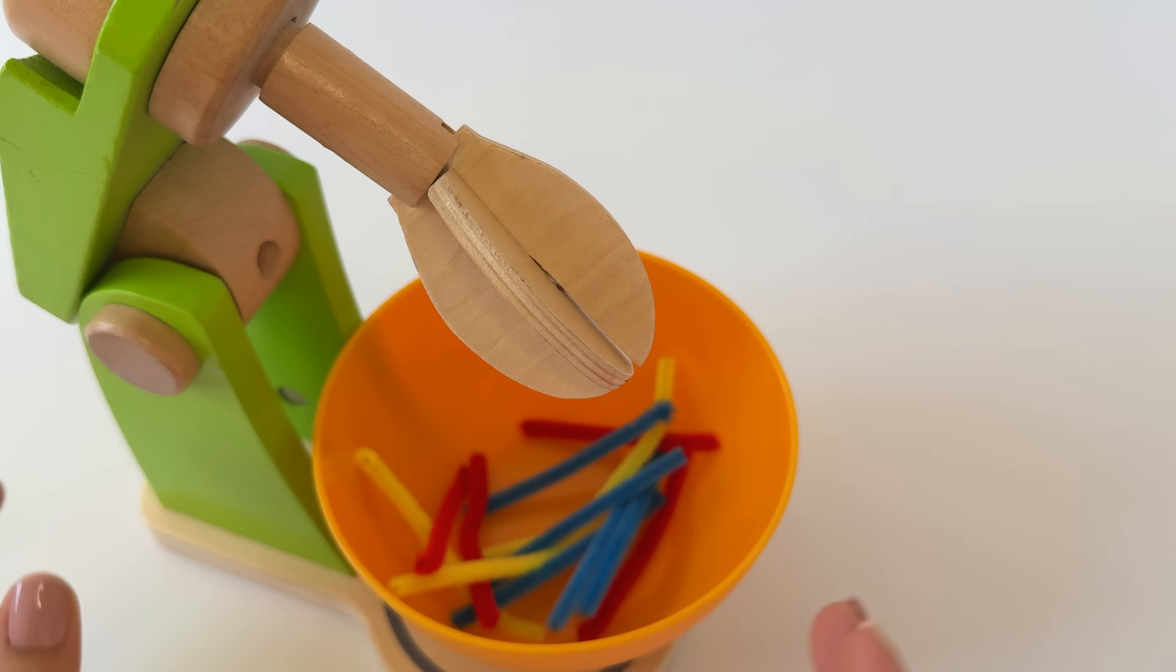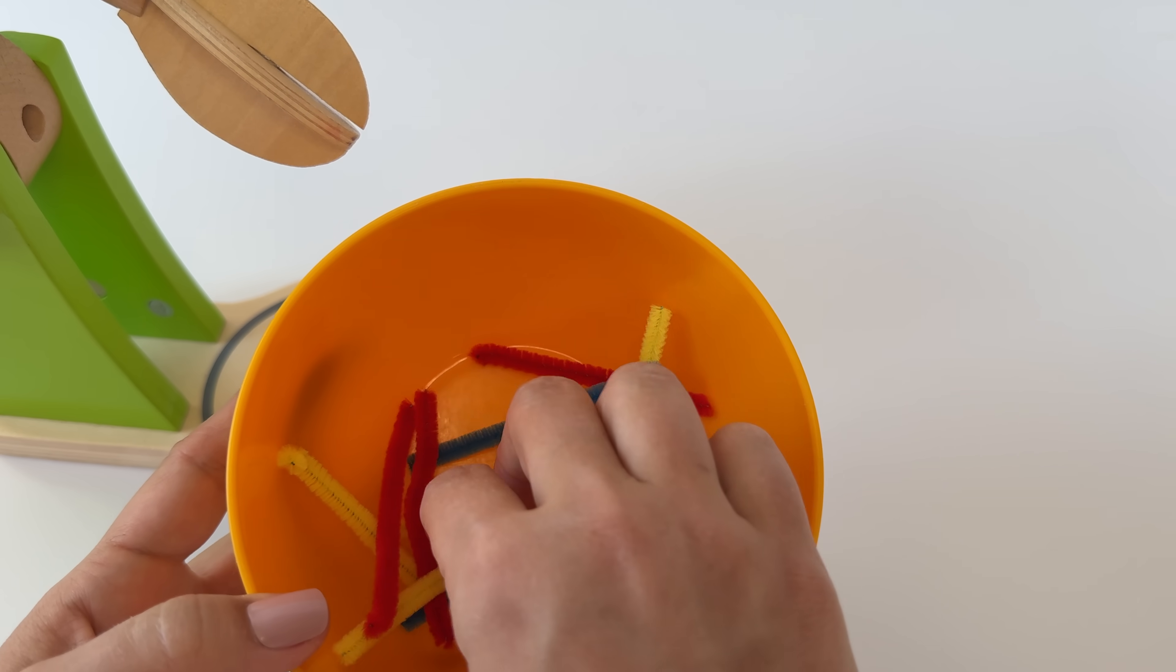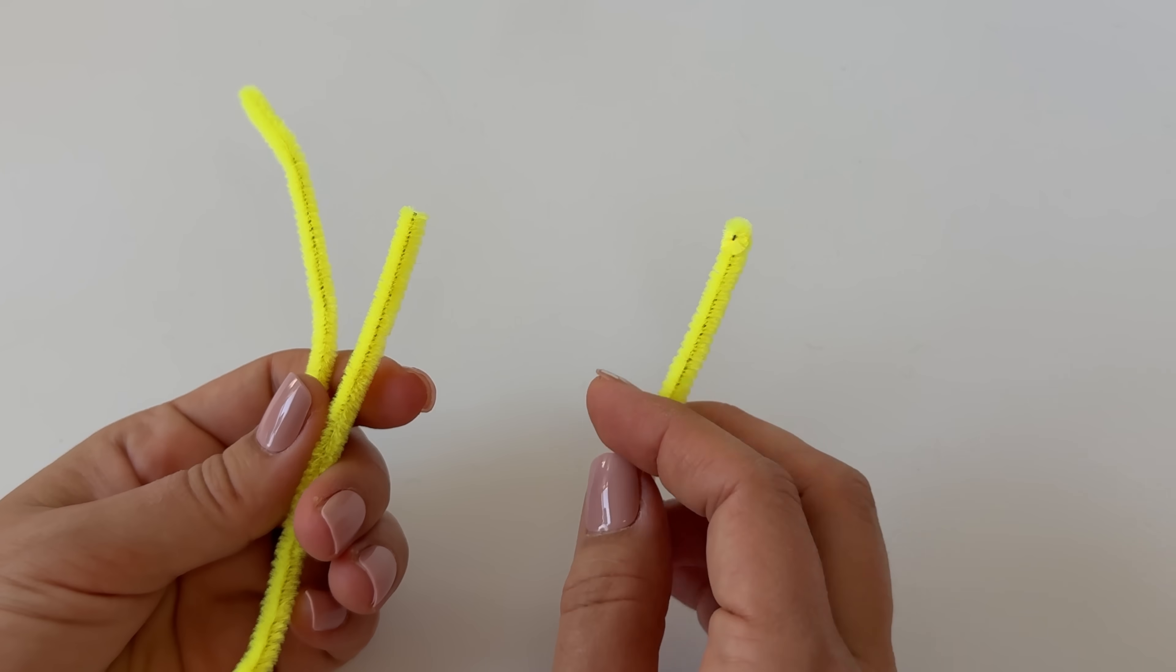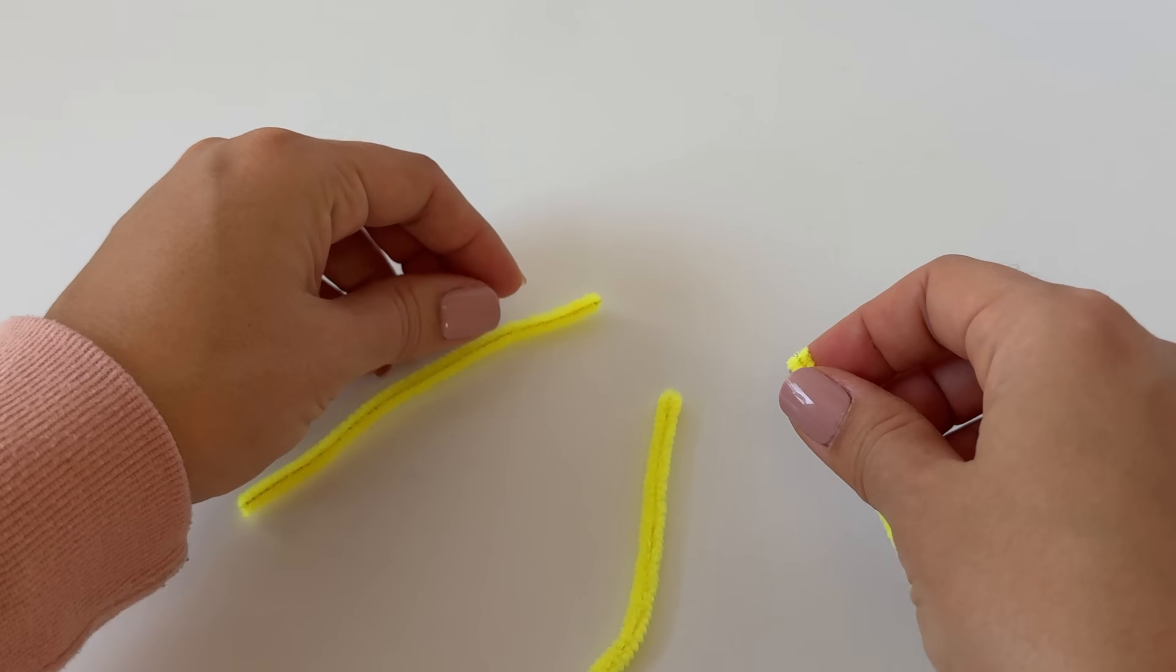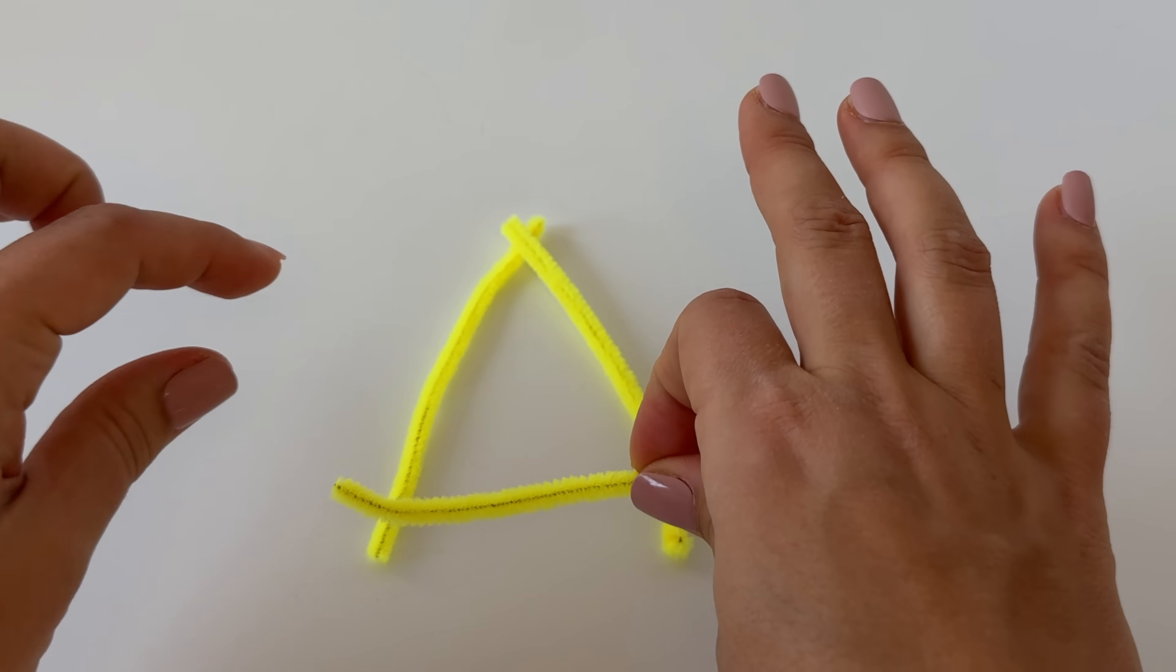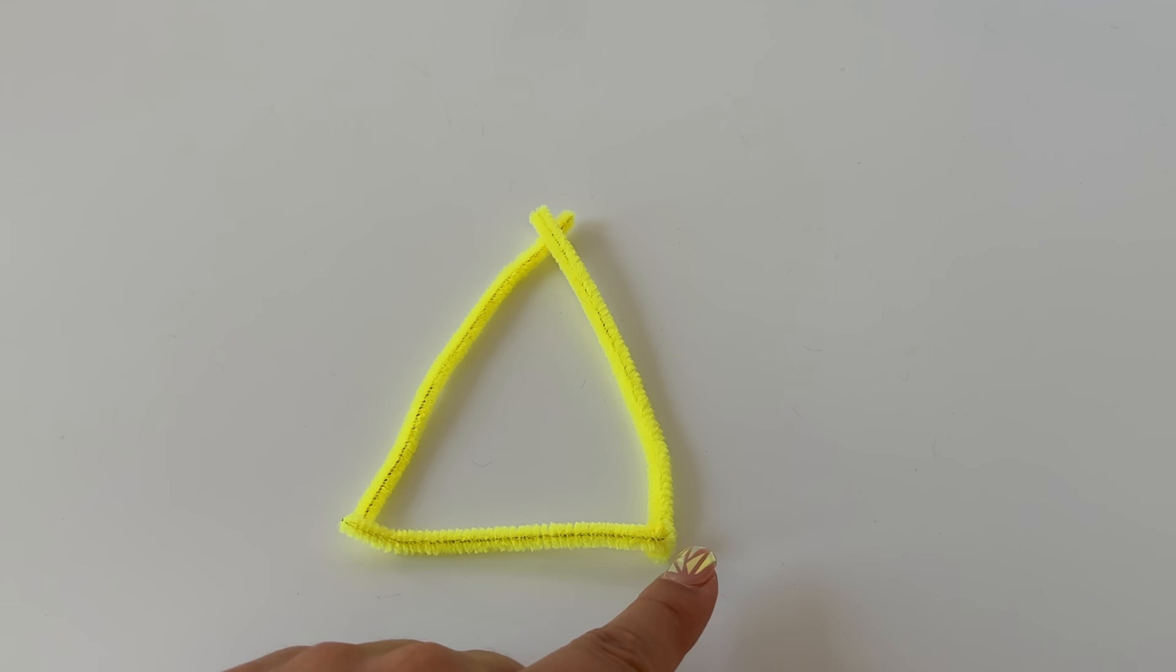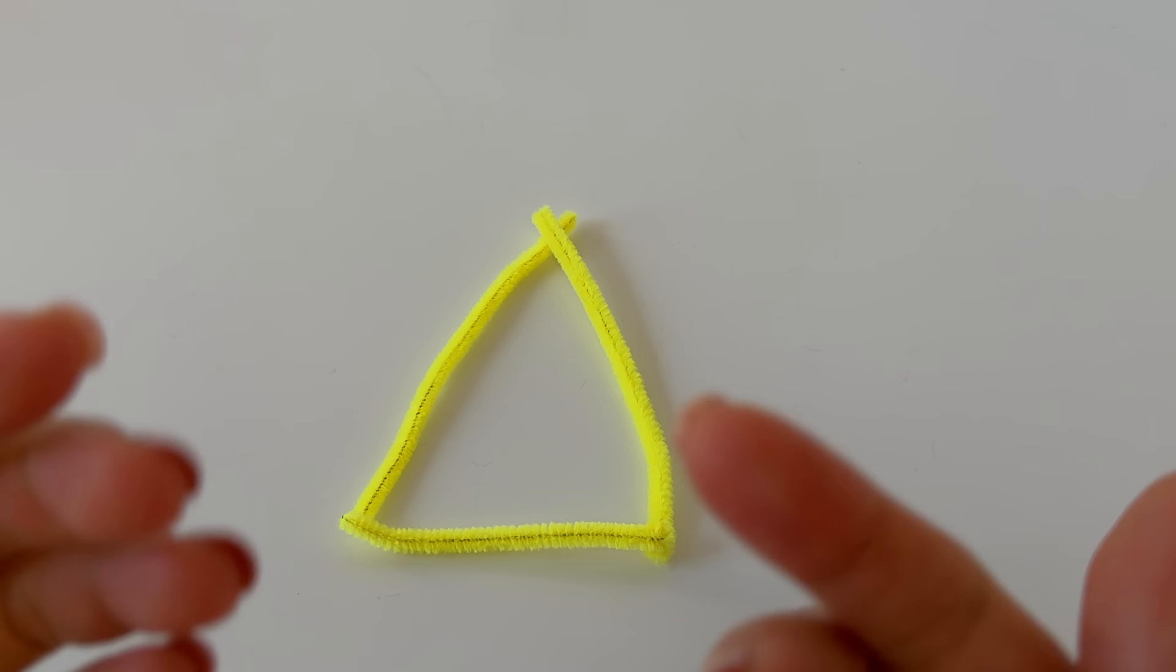Let's find some yellow pipe cleaners to make a triangle. Do you see any yellow pipe cleaners in here? There's one, two, three. Three pipe cleaners. So a triangle has three sides. Three straight sides. So let's put these two together like that. And then we need to close it off because a triangle is a closed shape. No open sides. And look at that. Let's count the sides. One, two, three. And it's closed on all the sides. They're all touching and they're all straight. Triangle.